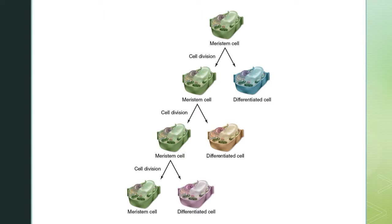A single meristematic cell when it divides can make another meristematic cell, or it can create a differentiated cell like a leaf cell or a stem cell. That's how meristematic cells work.